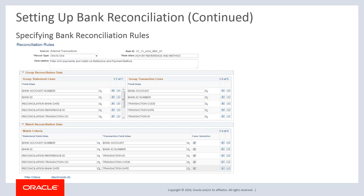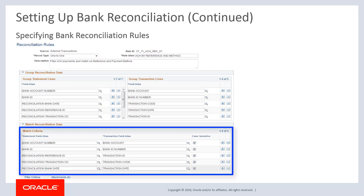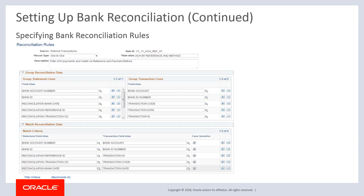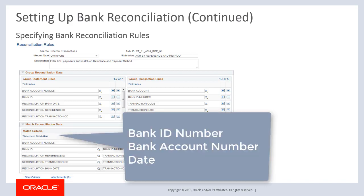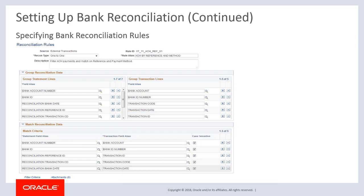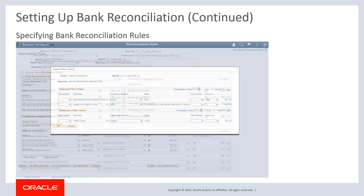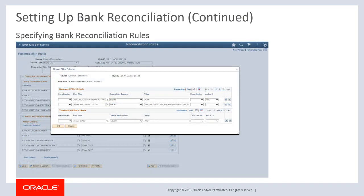Next, add match criteria using the match criteria grid. Only match using criteria that has been used to group statement lines and transaction lines. For all rules, match bank ID number, bank account number, and date, then add additional match criteria for each rule as needed. You can attach documents to each rule using the Attachments link. Click the Filter Criteria link to access the Recon Filter Criteria page and add filter criteria for statement lines and transaction lines. Note that each time you add, modify, or delete filter criteria with reconciliation rules, run Reconciliation Rules SQL Processing.